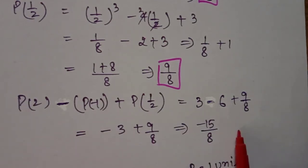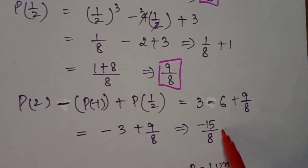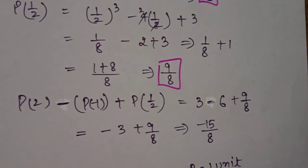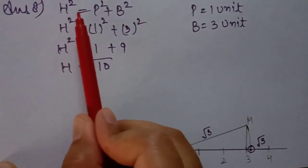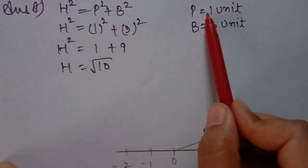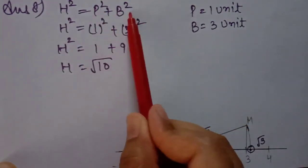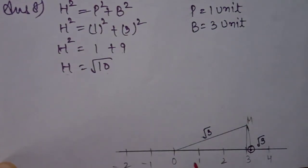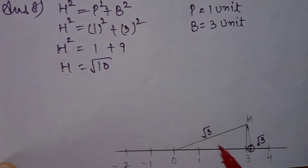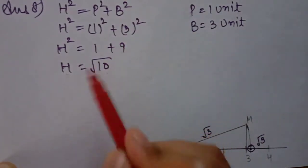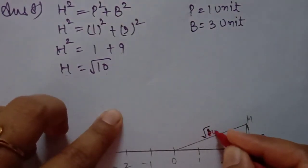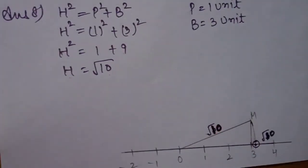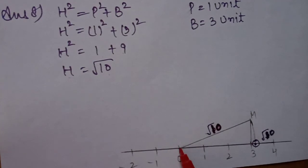Question 8: locate root 10 on the number line. Using the Pythagoras theorem, take perpendicular as 1 unit and base as 3 units: 1 squared plus 3 squared equals 1 plus 9 equals 10, so the hypotenuse is root 10. Draw the number line with points 0, 1, 2, 3, 4 at equal distances. Take base 3 from the origin, draw perpendicular of 1 unit, and the hypotenuse is root 10. Put the compass at the origin with pencil at the hypotenuse tip and mark root 10 on the number line.